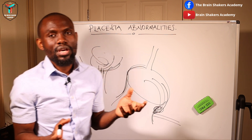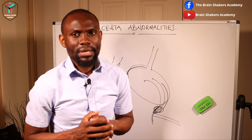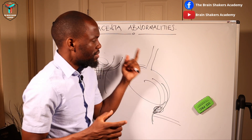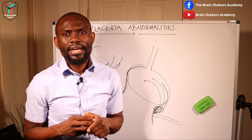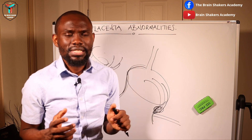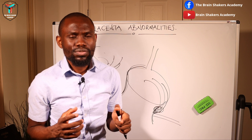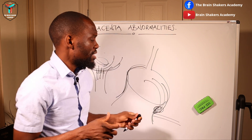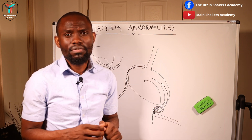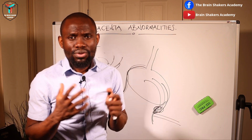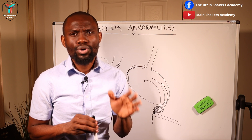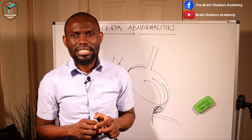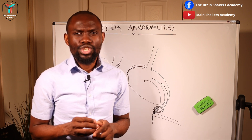Those are the main abnormalities found around the placenta and placental insertion. It is important to note these abnormalities so that after delivery you can determine whether you have a complete placenta. If there is an extra lobe with vessels crossing over, you must thoroughly check for retained products of conception, as that would lead to postpartum hemorrhage by causing uterine atony.